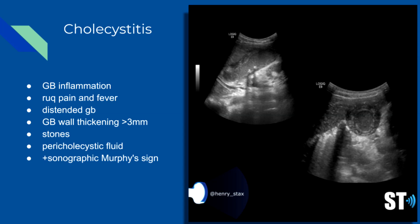Cholecystitis — sudden onset of gallbladder inflammation — is a common surgical emergency. The most common cause is a gallstone in the neck or cystic duct. It presents with right upper quadrant pain and fever, along with a distended gallbladder and gallbladder wall thickness greater than three millimeters.